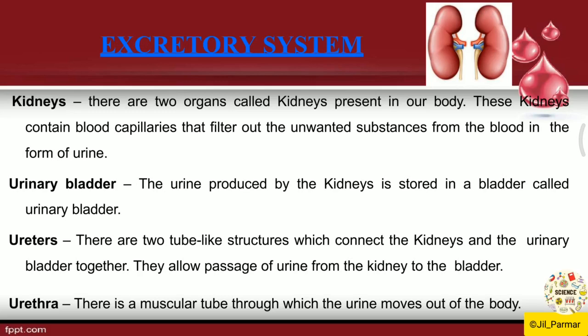The kidney's job is to remove waste products from the blood. The urine produced by the kidney is stored in the urinary bladder. Whatever waste material the kidney has produced needs to be stored somewhere, and that storage is done by the urinary bladder.